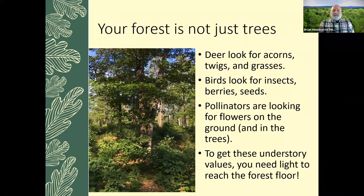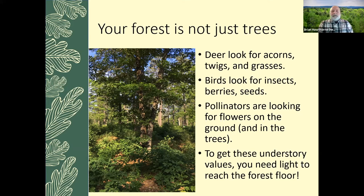Your forest is not just trees. It's also what's growing on the forest floor, and wildlife relies on that both for food and for cover. Deer, for example, are looking for acorns, twigs, grasses, and sedges. Birds are looking for insects, berries, seeds, and acorns. Pollinators are looking for flowers on the ground and in the trees and shrubs. But to get those understory values, you need enough light to reach the forest floor.